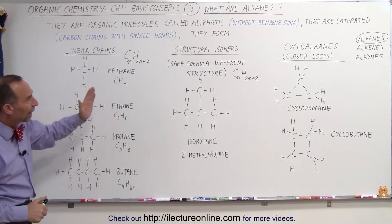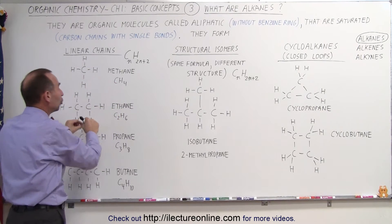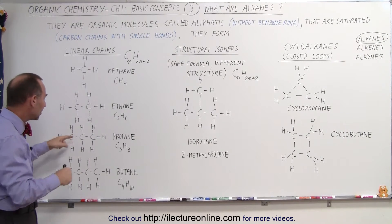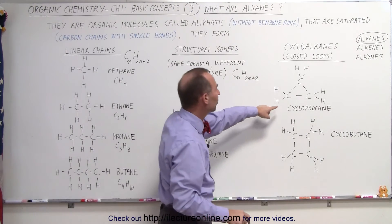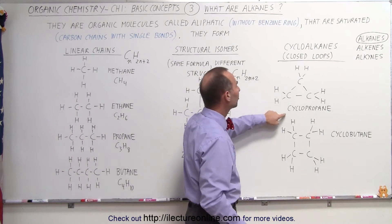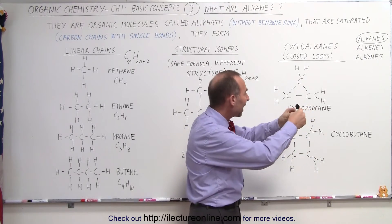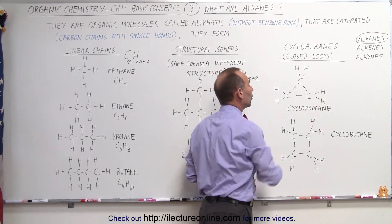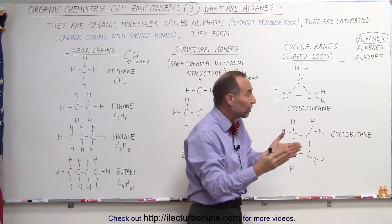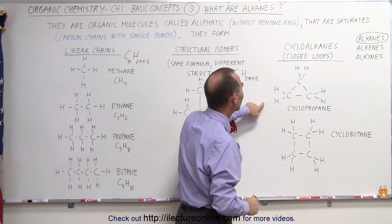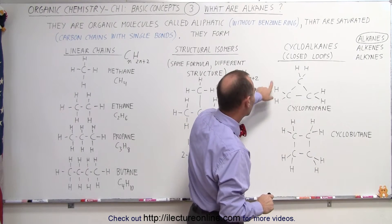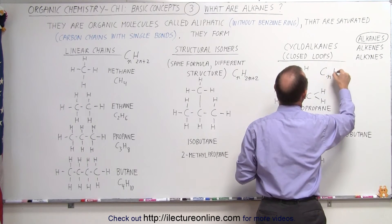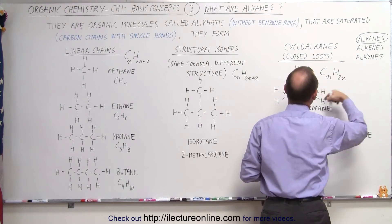Let's now jump to the cycloalkanes. What happens when you take those chains and make a closed loop? You can't do that with methane or ethane — there simply aren't enough carbons. But when there are three of them, you can make a triangular shape. Propane now becomes cyclopropane because the carbons form a full loop — in this case a triangle. Notice the general formula for cycloalkanes is CₙH₂ₙ.